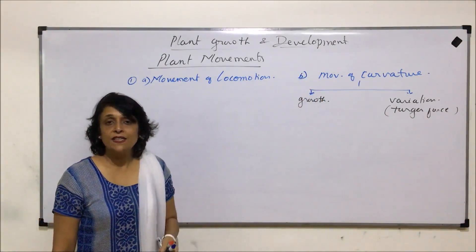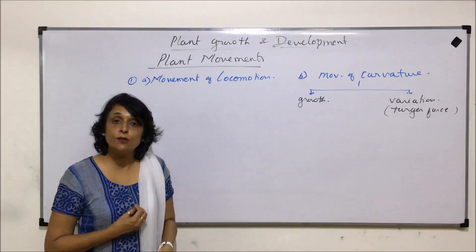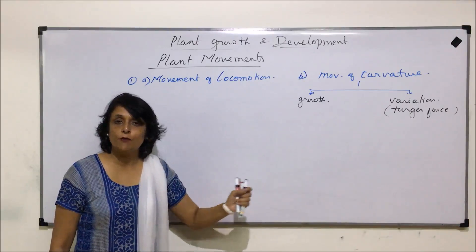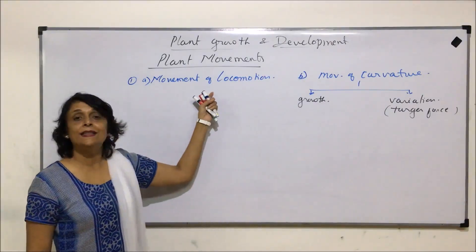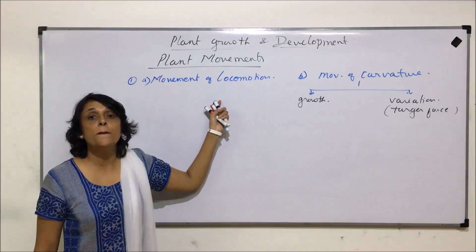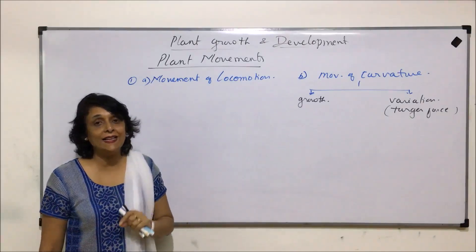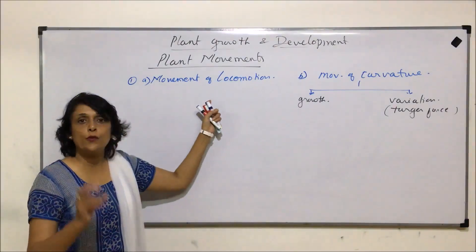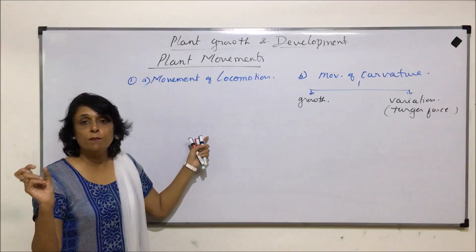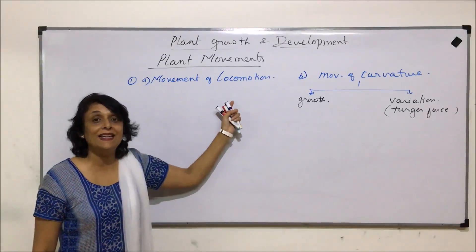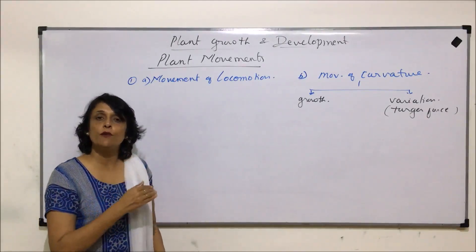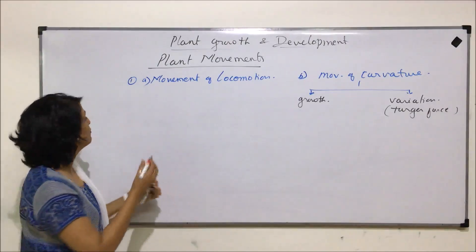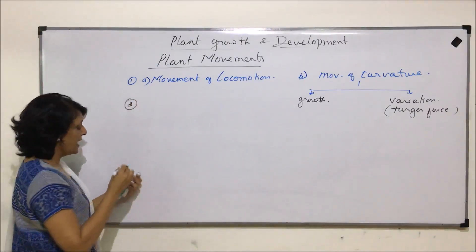For locomotion, the plant must have some structure to help movement from one place to another. This is normally seen in the male gametes of bryophytes and pteridophytes. These male gametes are flagellate and they move from the male reproductive part to the female gamete — they are swimming from one place to another. This is one way of classifying these movements.